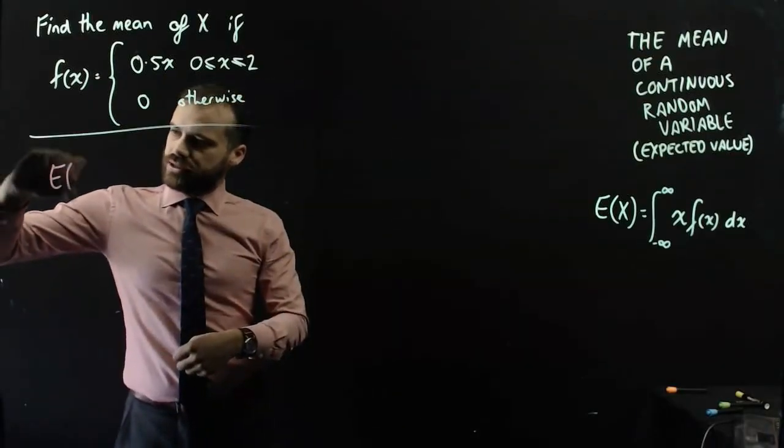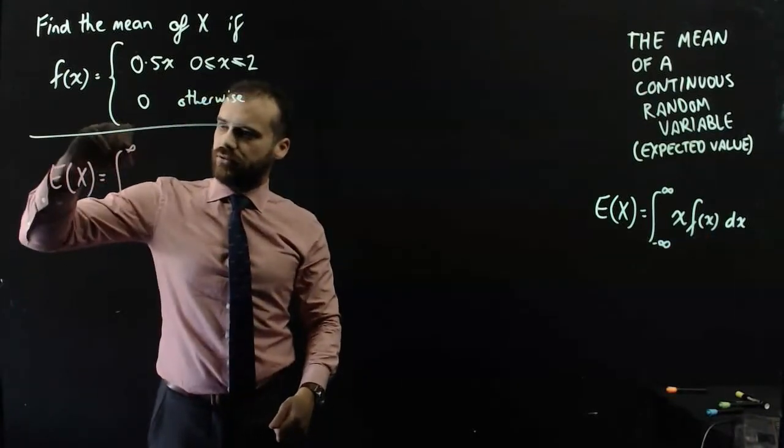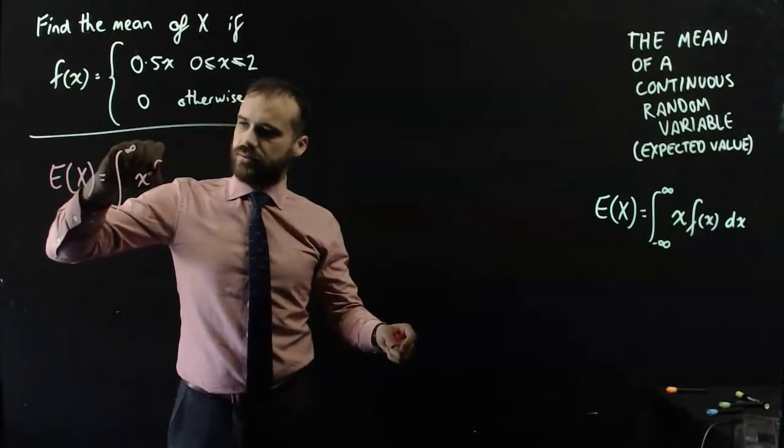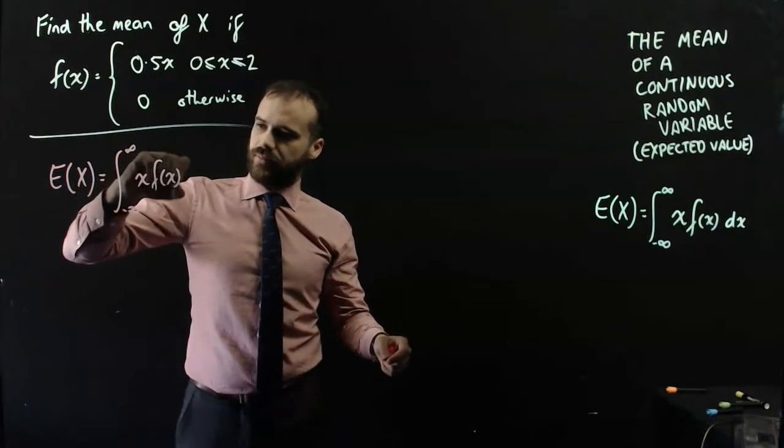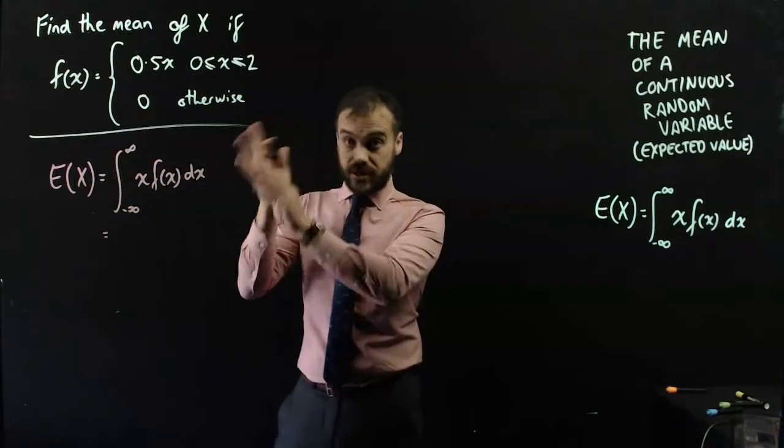The expected value of x is equal to our little formula here, from infinity to negative infinity, x times f of x with respect to x. Now, in this particular case,